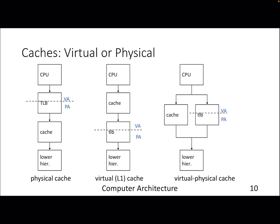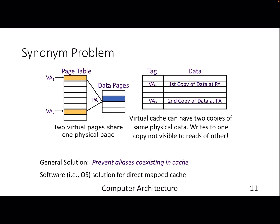Now coming to caches — caches can be of various kinds given this virtual memory world. We can have caches that use physical addresses only, meaning there is a TLB before cache access and the cache always gets the physical address. We can also have a virtual cache where the CPU directly provides the virtual address and the cache responds using virtual addresses. Or we can have a combination of virtual and physical addressing and try to access the TLB and cache concurrently.